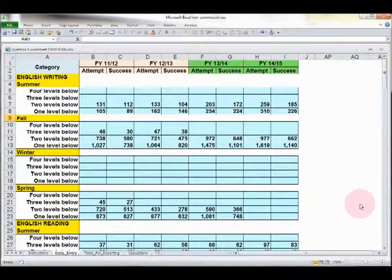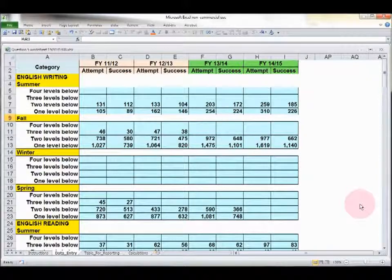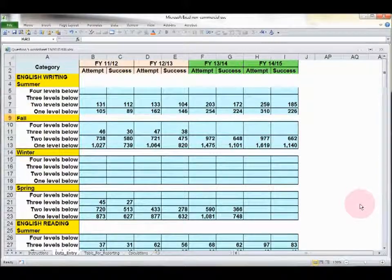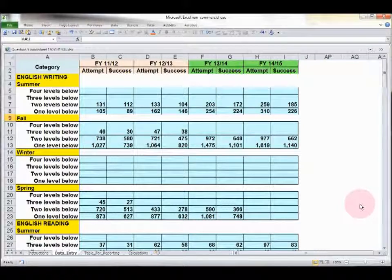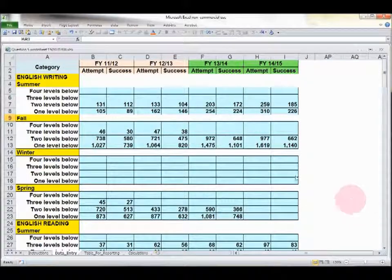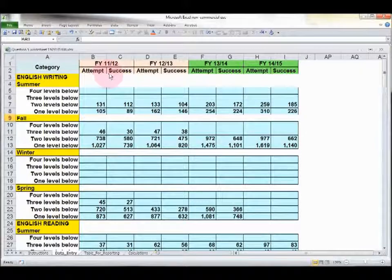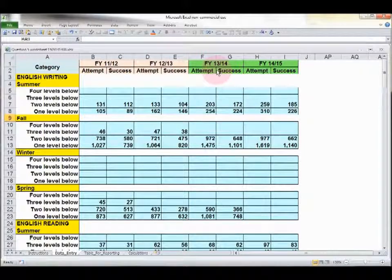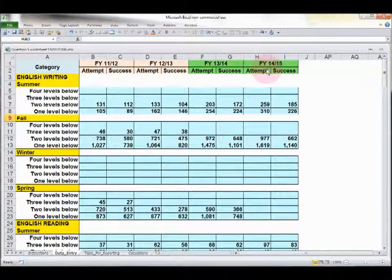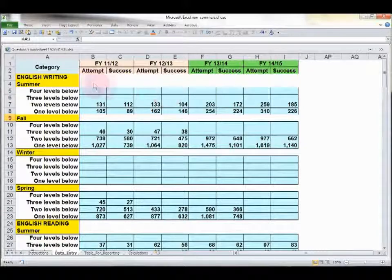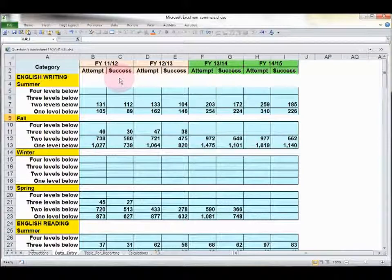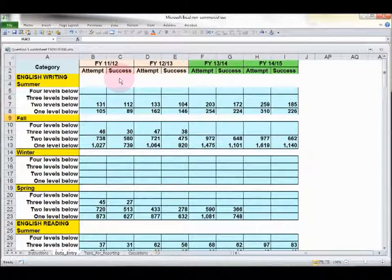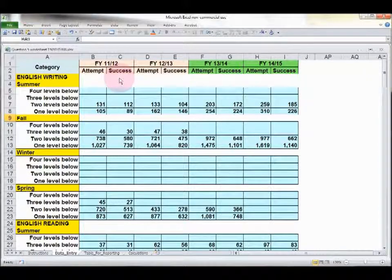On this tab, you'll notice that there are a number of cells into which you can put data. In this case, these cells have already been populated with data from one of the colleges. Notice that you've got fiscal year 11-12, 12-13, 13-14, and 14-15. These are the four years of interest. Notice these items here, attempt and success. Those are terms that are used with the basic skills tracker at Datamart.